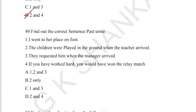Question number 49: find out the correct sentences — past tense. (1) 'I went to her place on foot' — correct. (2) 'They requested him' — incorrect. (3) 'When the manager arrived, the children were playing in the ground' — were playing (past continuous) is correct. (4) 'If you had worked hard, you would have won the relay match' — four is incorrect. So one and three are the correct sentences. Option C is the answer for question number 49.